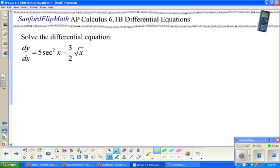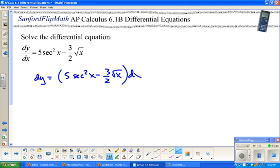Again we're going to do the same idea. We're going to separate variables. So dy equals 5 secant squared x minus 3 halves square root of x times dx. And we'll do a little antiderivative action here.